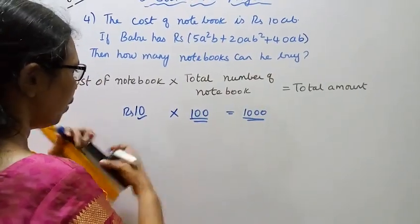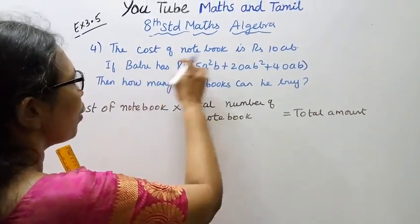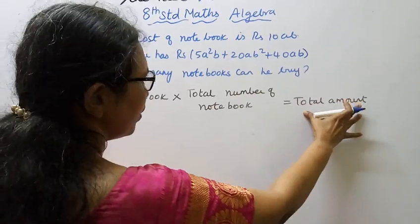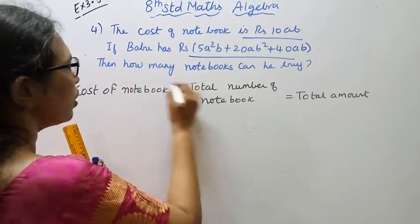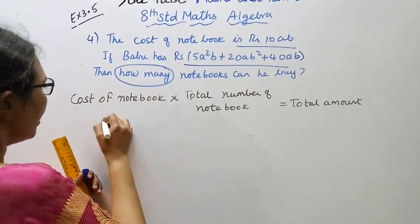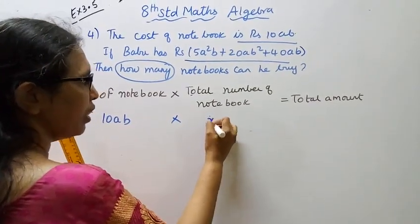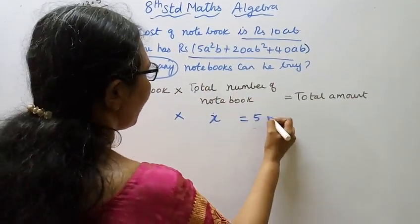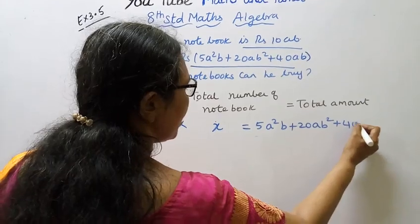Cost of notebook is Rs. 10ab. Babu has the total amount. Total amount divided by cost of notebook equals total number of notebooks. Cost of notebook times the number equals the total: 10ab times x equals 5a²b + 20ab² + 40ab.